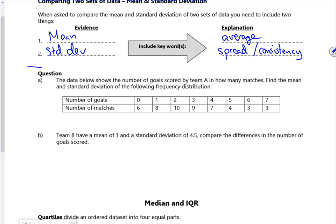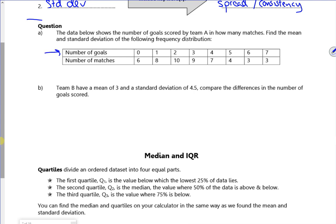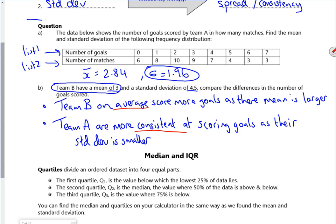Now I'm on nine minutes, so I might just stop there. Do you know what? I think I'll stop there. Actually, let's keep going. So if you put that in your calculator, that goes in list one, that goes in list two, it gives you x bar is 2.84 and sigma is 1.96. So it says team B have a mean of three and a standard deviation of 4.5. Compare the differences. Team B, on average, are scoring more goals. However, team A are more consistent with their goals, because I've got a small standard deviation.